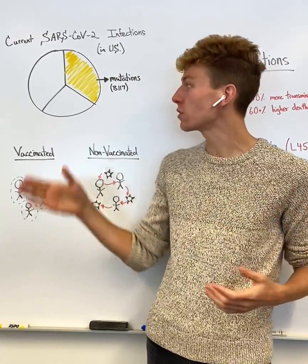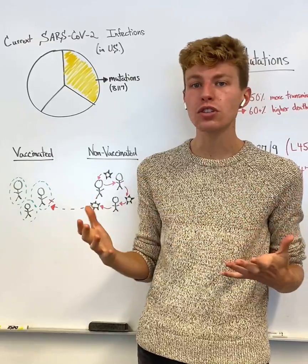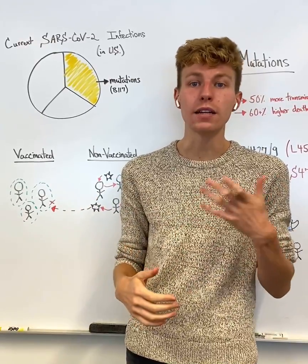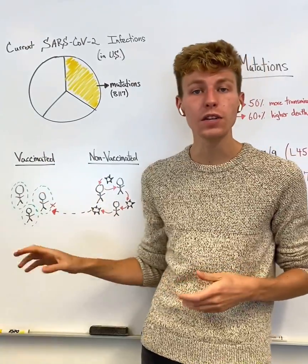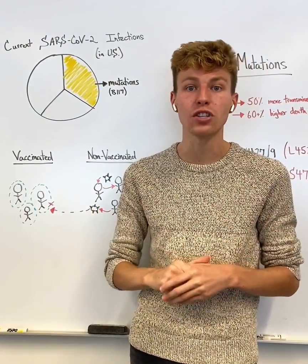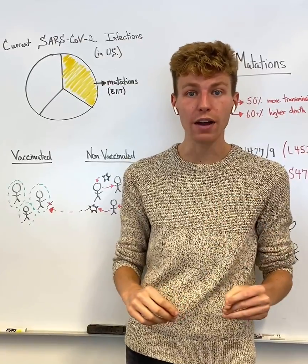But why does it matter for us to keep in mind these different mutations if we have a vaccine that's being continuously distributed? Well, in the vaccinated groups, these individuals have around 80% protection against COVID-19 if they come in contact with the virus.